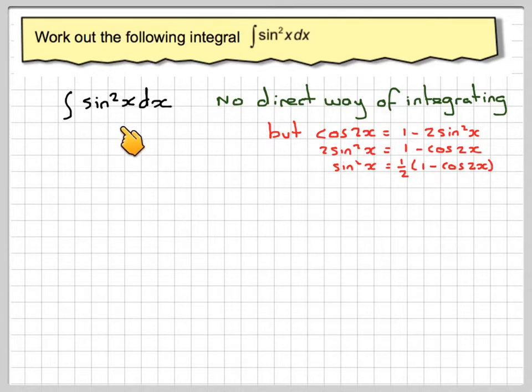So what we do is replace sine squared x with this, because we can actually integrate this. The integral of sine squared x dx is one-half integral of 1 minus cos 2x dx. The one-half can be taken out of the integral since it's just a number.